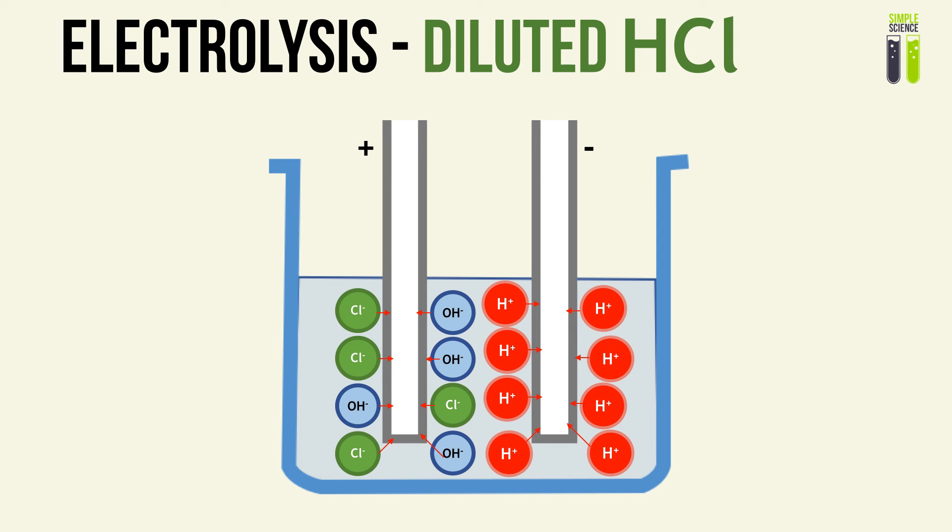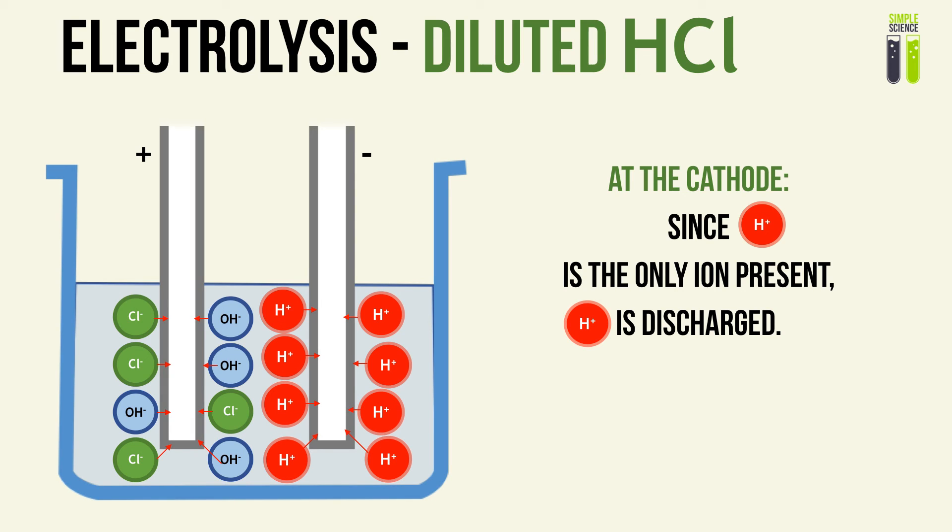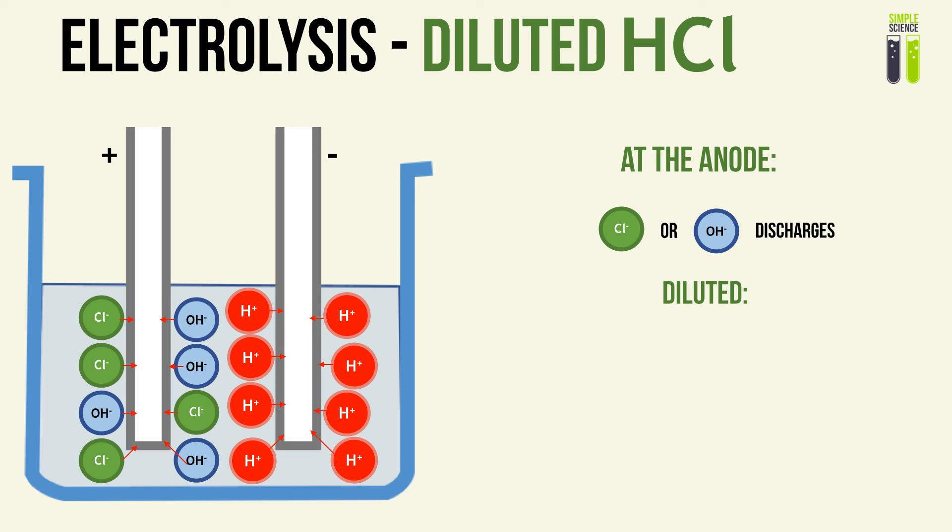Now let's look at diluted hydrochloric acid. In this solution, we only have three ions: the H+ ion, the Cl⁻ ion, and the hydroxide ion. At the cathode, there is only one cation to consider — the H+ ion — so it will be the only one discharged. At the anode, since it is a dilute solution, the hydroxide ions will always discharge.